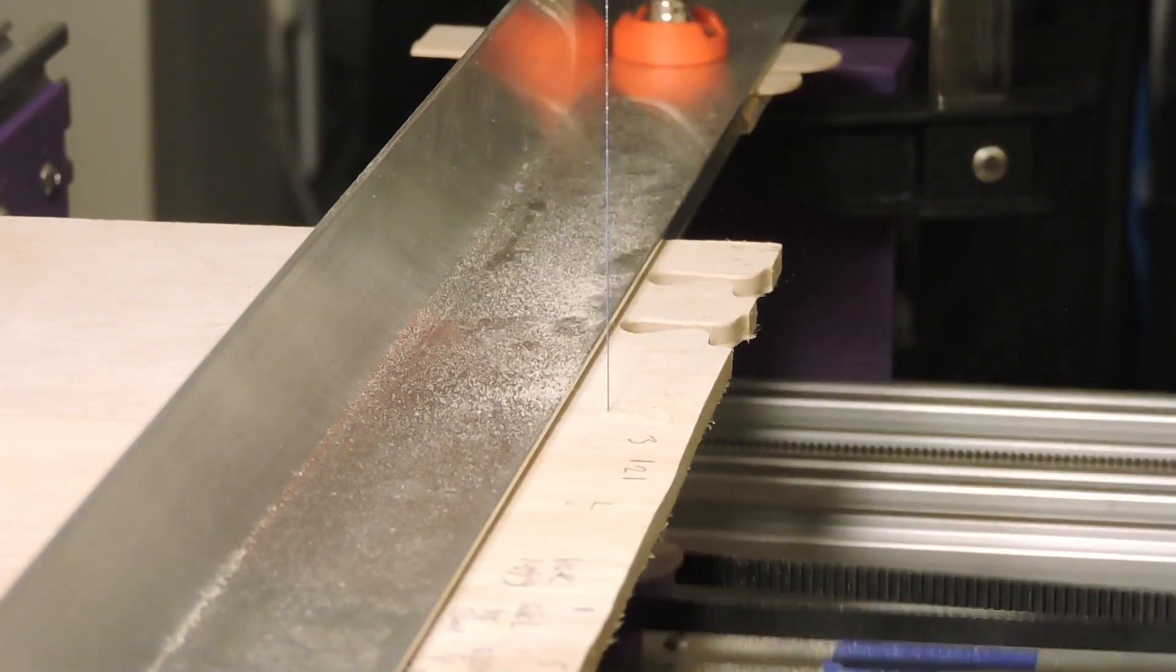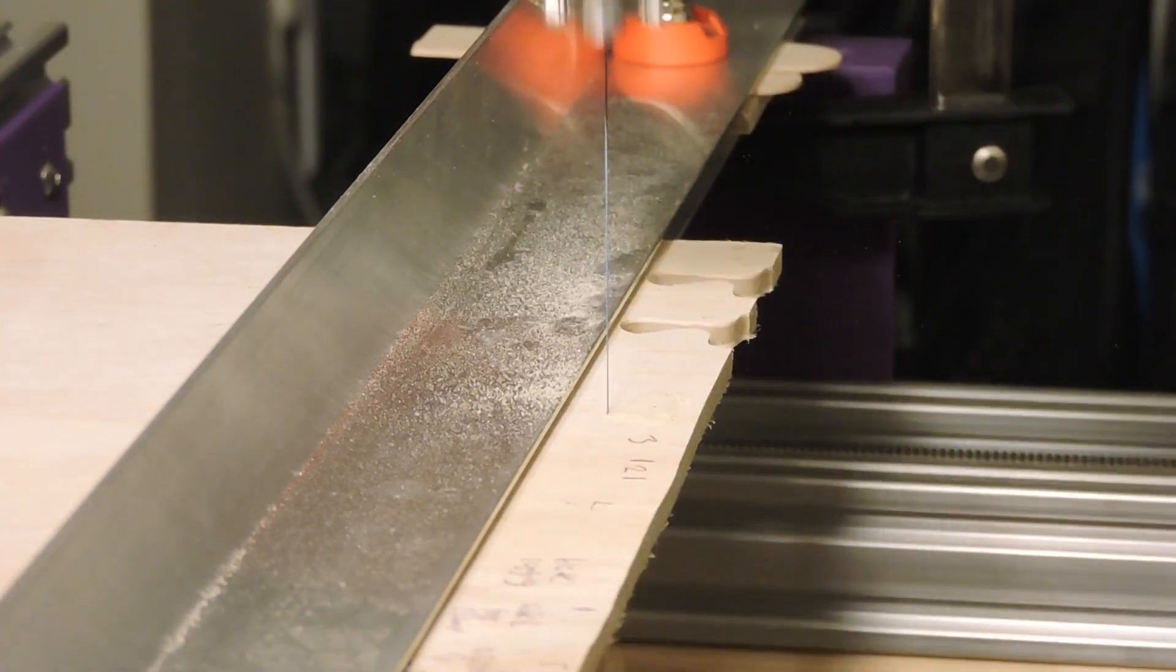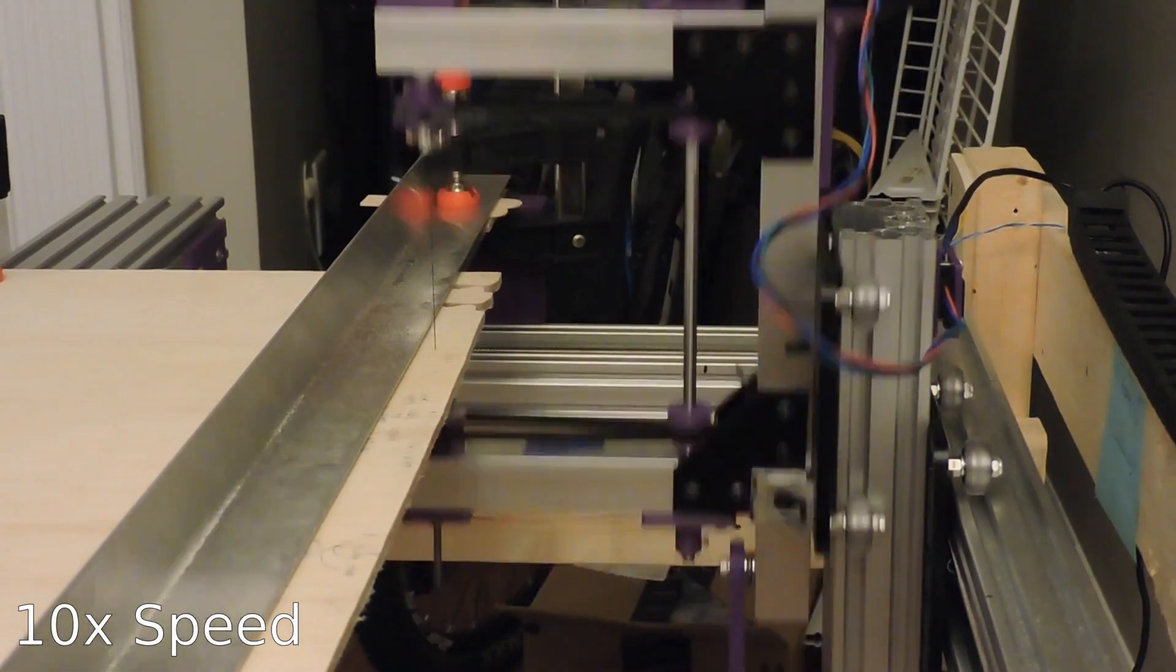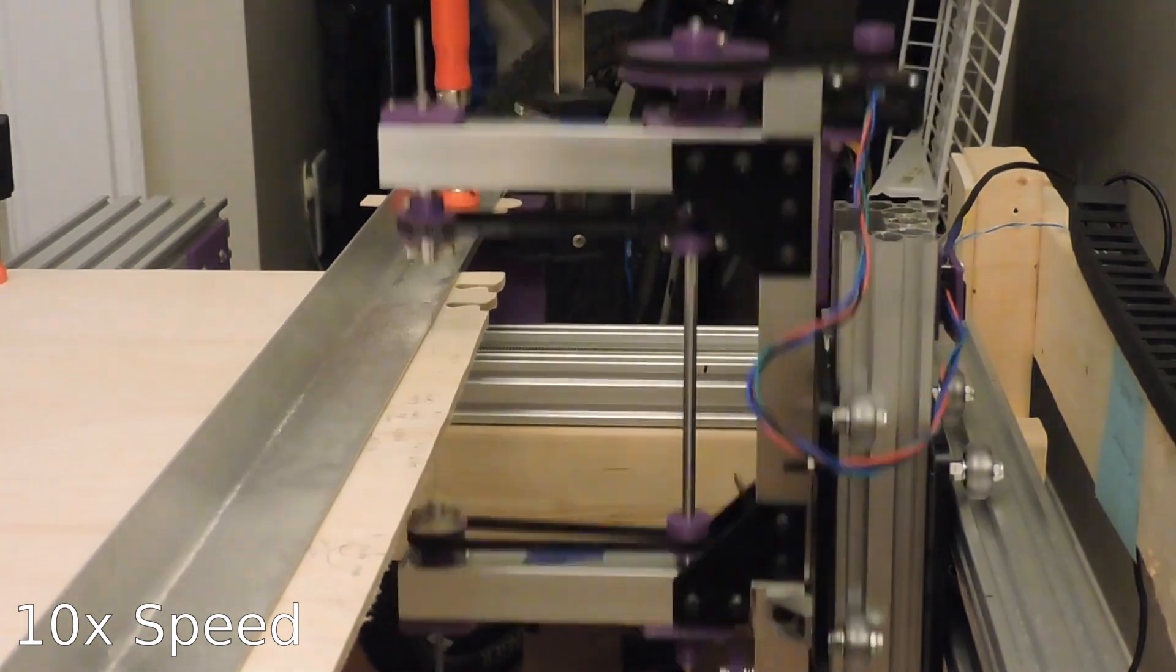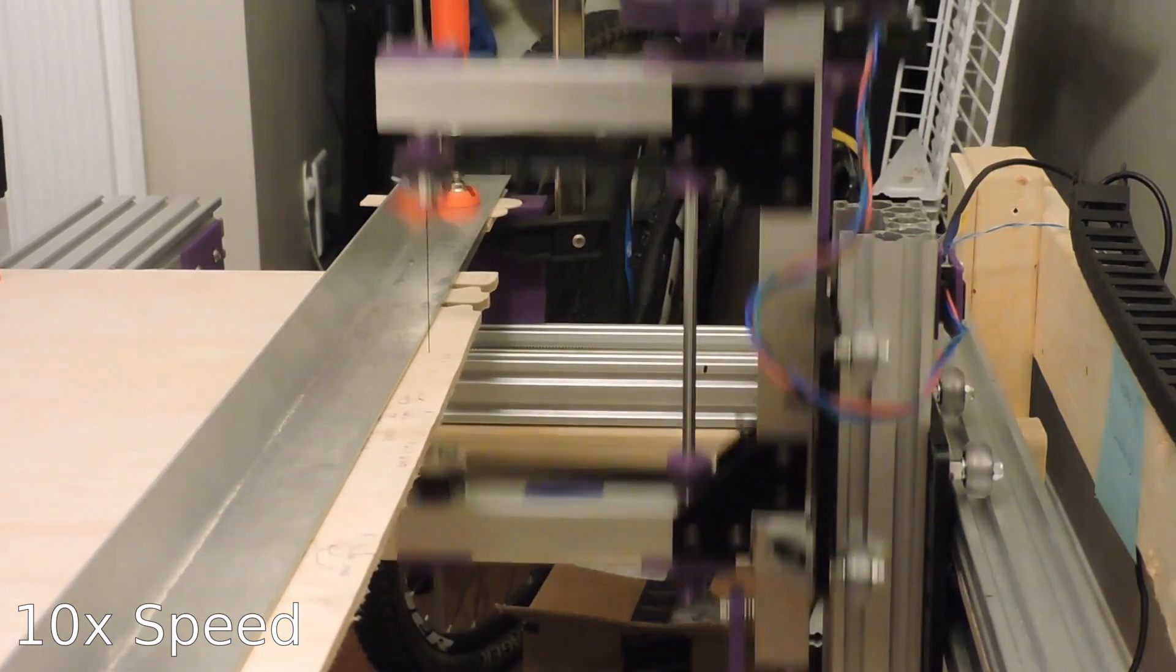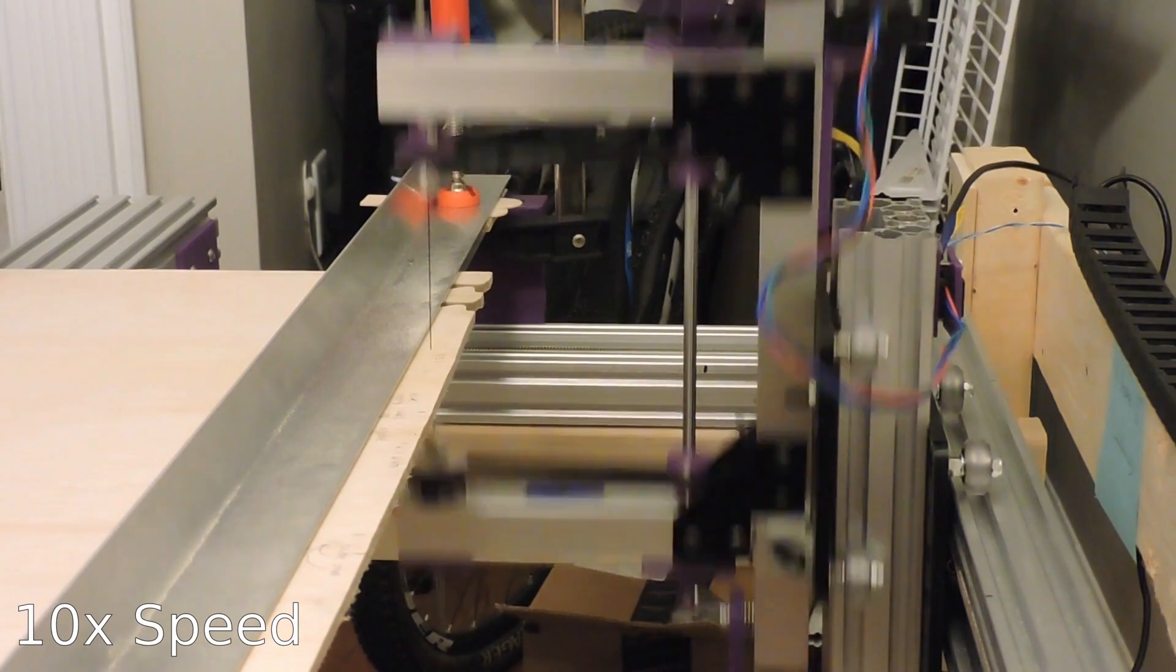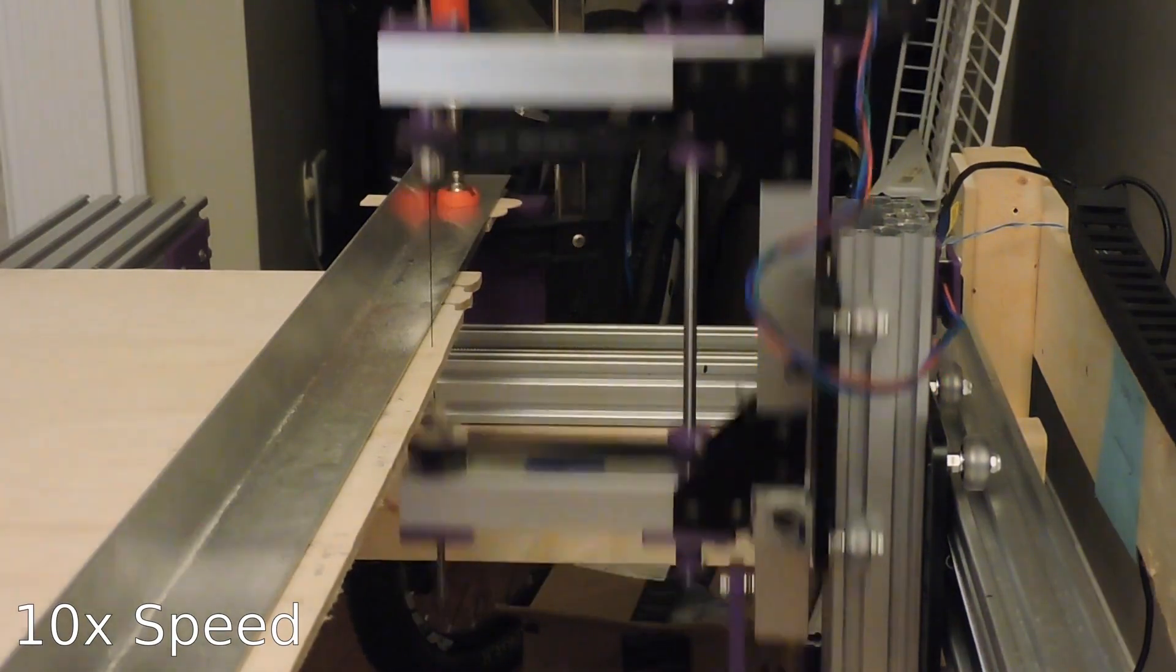The two aluminum L profiles there provide support from the bottom and prevent the workpiece from bending upwards too much on the upstroke. And here you can just make out the workpiece moving in and out as it finishes up this test cut.